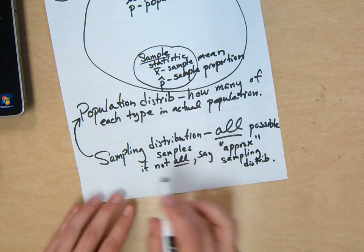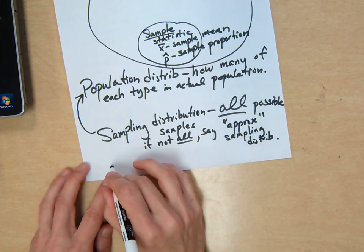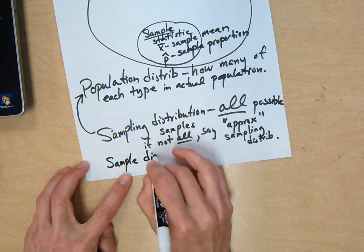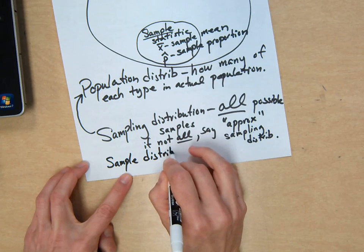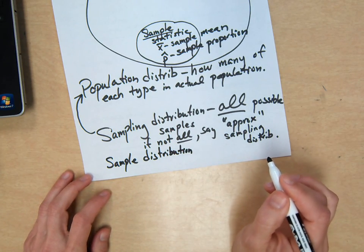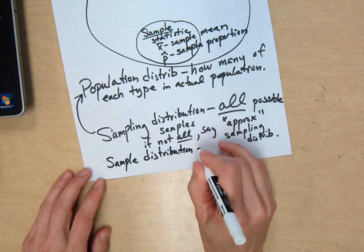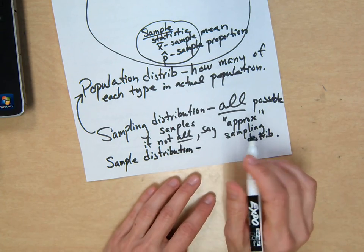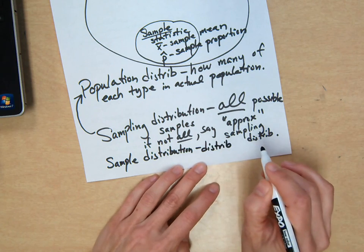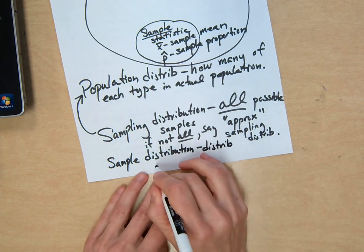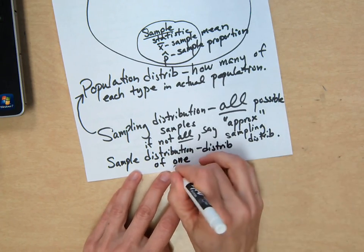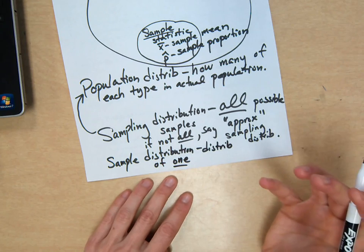And don't confuse this with the word sample distribution. This is the last vocab for part one. What do you think a sample distribution is? Not sampling distribution, but a sample distribution. A distribution in how many samples? In one. Yeah, exactly. If you just focus in on only one sample and you look at the distribution, like how many M&Ms are orange in that one particular sample, that's a sample distribution.